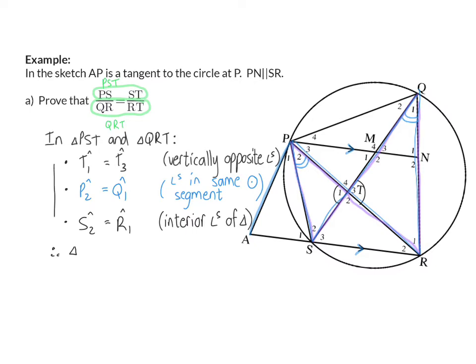Now we can make the conclusion that these two triangles are similar. I'm going to write the correct order, so TPS will be similar to TQR and my reason, angle, angle, angle.